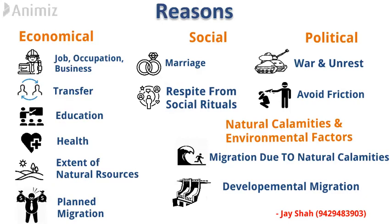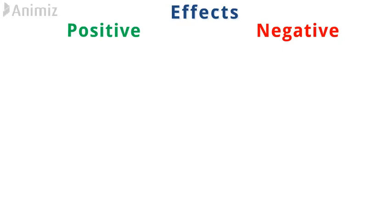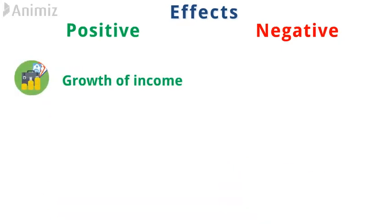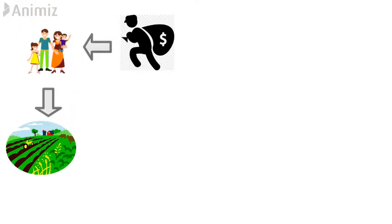Overall, the reasons of migration can also be asked separately as a five-mark question. In the fifth and last part of our video, we will learn about the effects of migration, in which there are two positive and four negative effects. First, positive effects — first is growth of income. The main purpose of migration is income generation. When a person migrates to an urban area, he will send some portion of his income to his family in the rural area. Such income gets invested in the agriculture sector and in turn develops it.